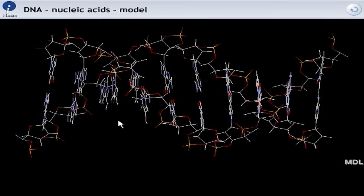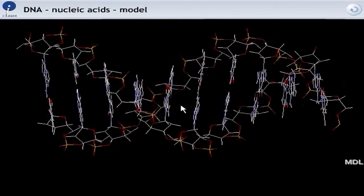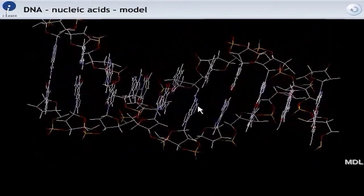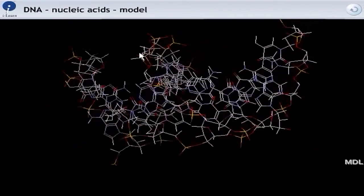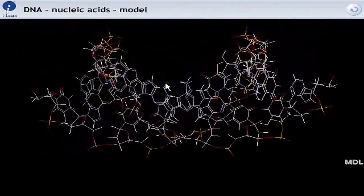Here's a model of DNA. The thing to notice running through it are these little strands of red and orange. If I turn it round, you'll see there are two strands of red and orange and they're connected together by these flat ring structures.